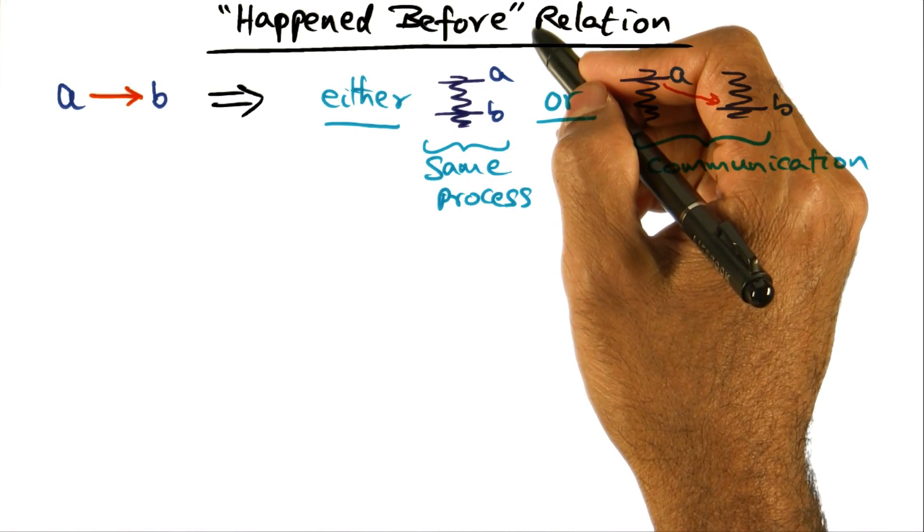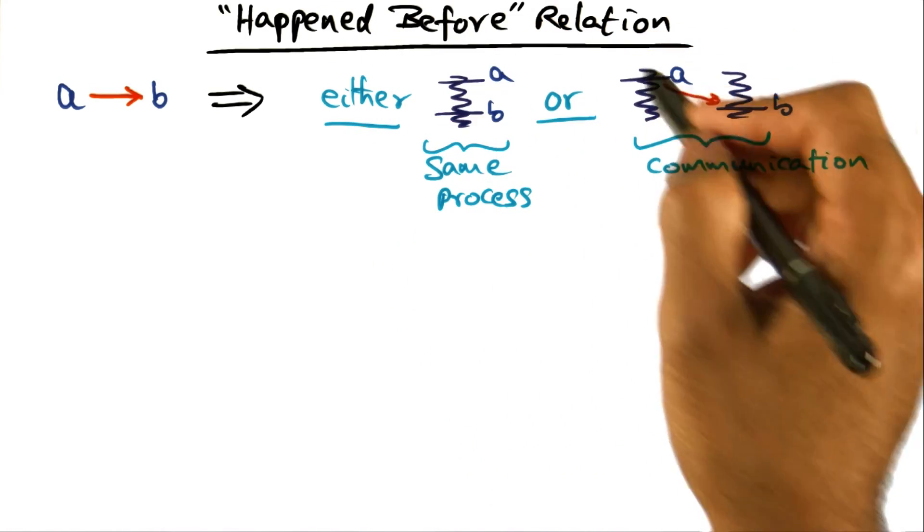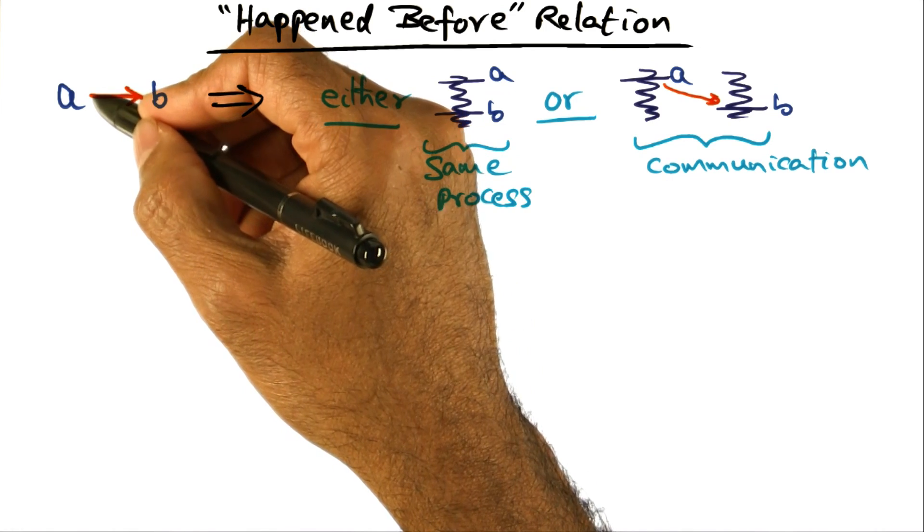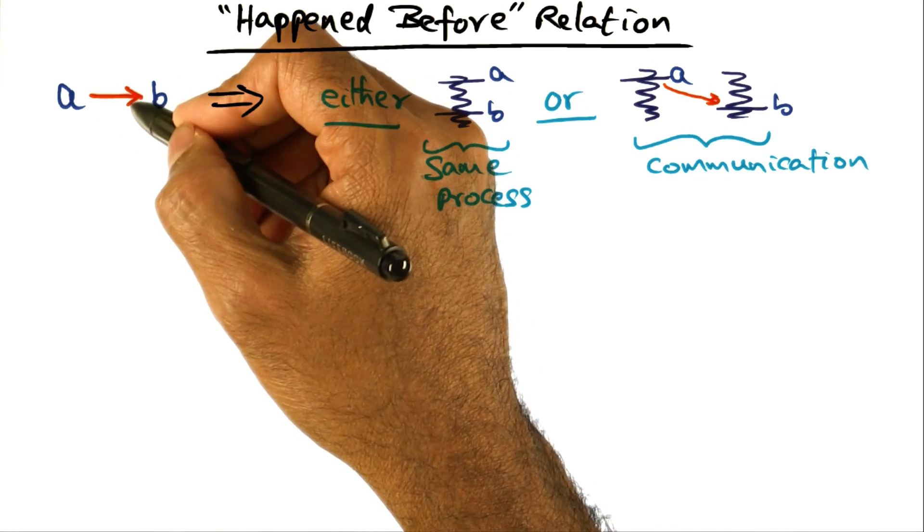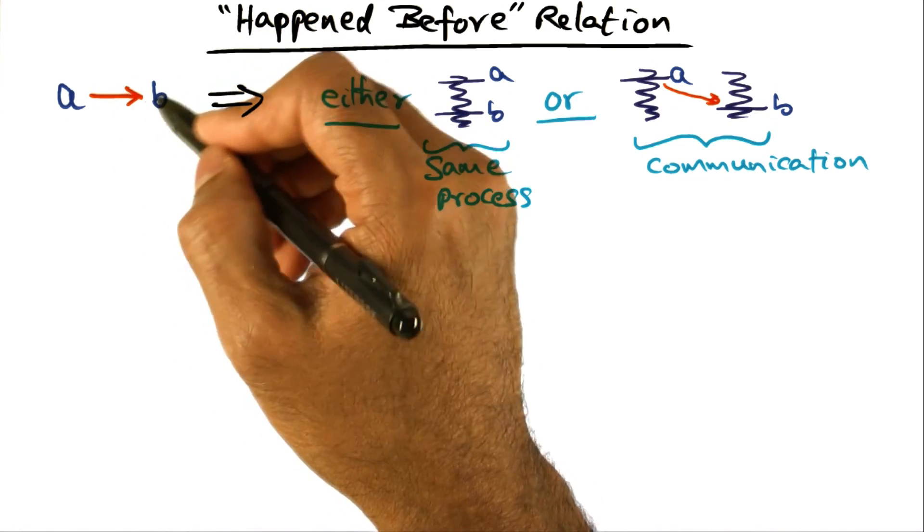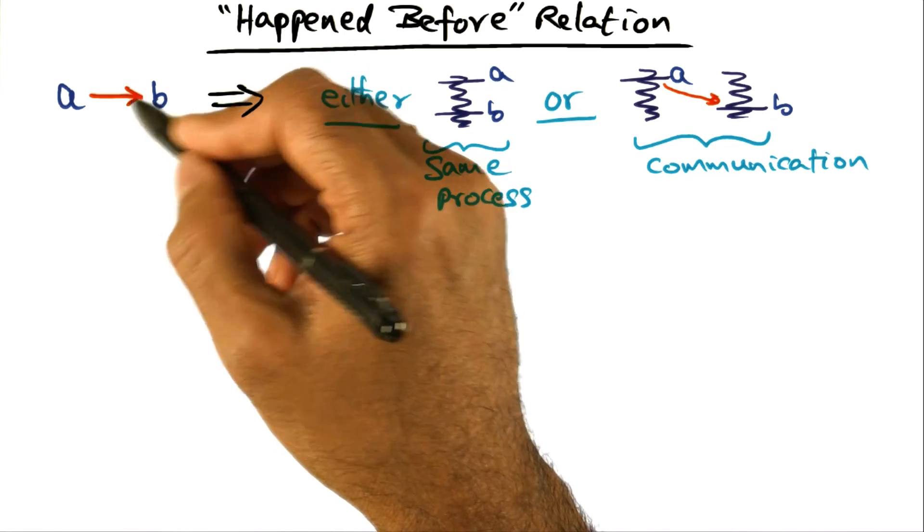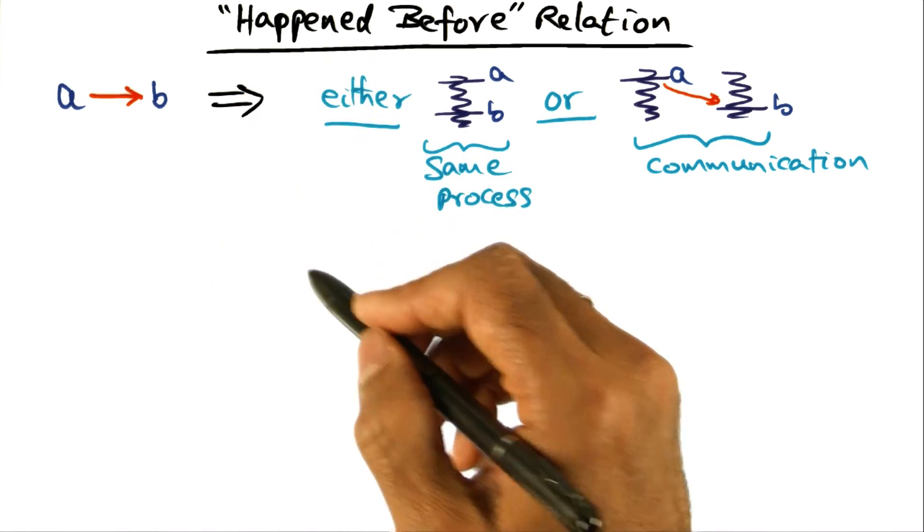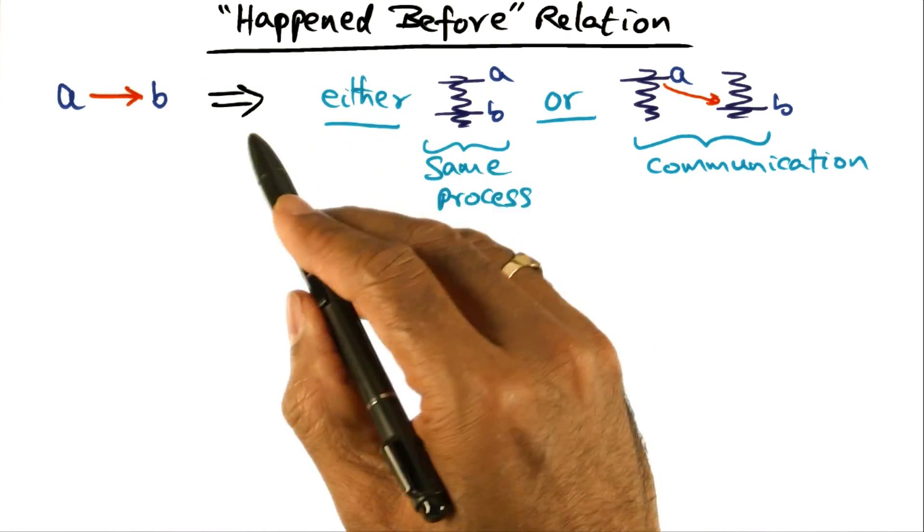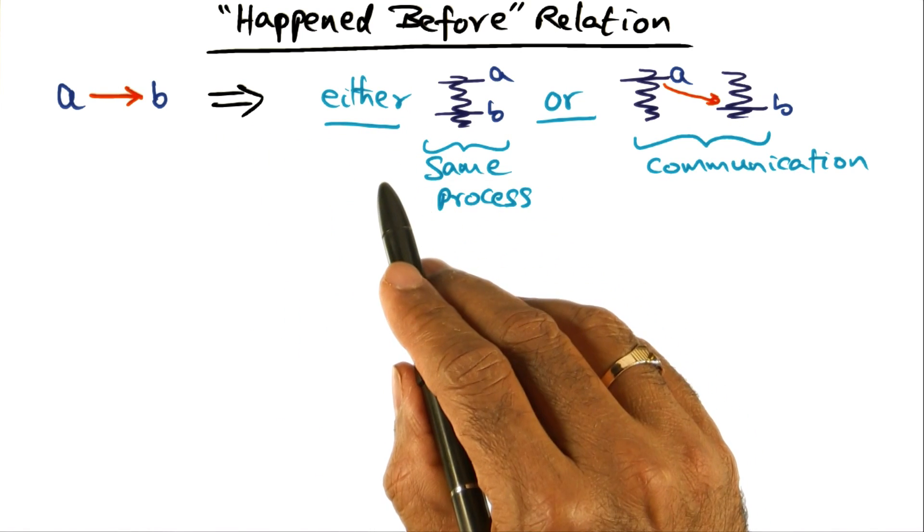So let's dig a little deeper into what we mean by the happened before relationship. I'm going to denote the happened before relationship with this arrow. A happened before B. That's what this notation means. What this notation is implying is one of two things.